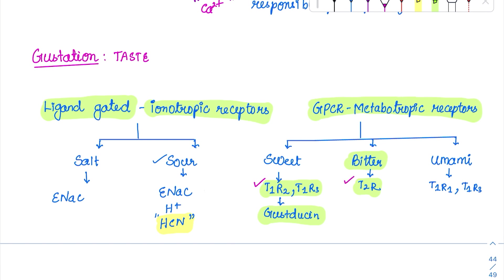For bitter taste, it is transported through the GPCR which is T2R. For umami, the two important receptors are T1R1 and T1R3. Additionally, there is one more receptor asked in MCQs — mGluR, which stands for monosodium glutamate receptor. This is the substance present in Chinese and South Asian foods like MSG (monosodium glutamate).